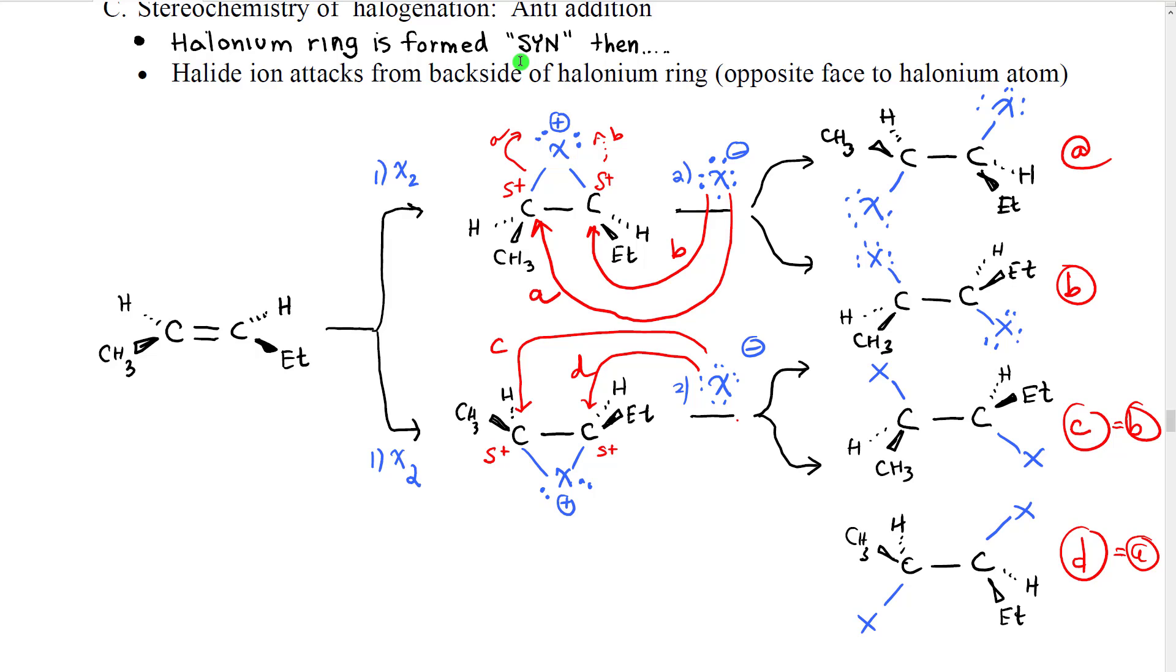The overall stereochemistry of this process is anti-addition. In the first step, when the halonium ring is formed, it is formed with syn addition. The halogen adds more or less simultaneously to both carbons, and therefore, it adds from the same face.